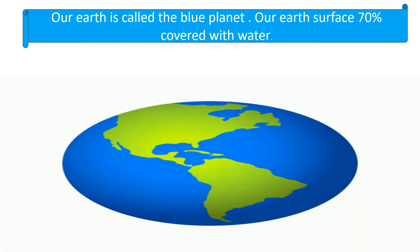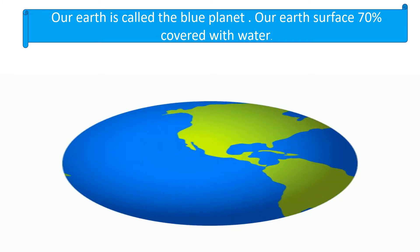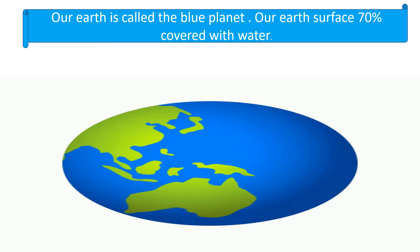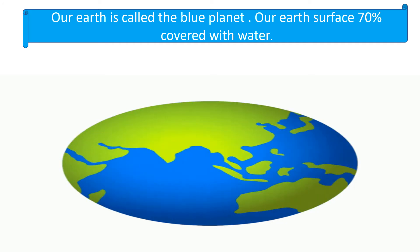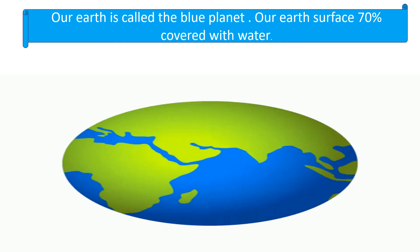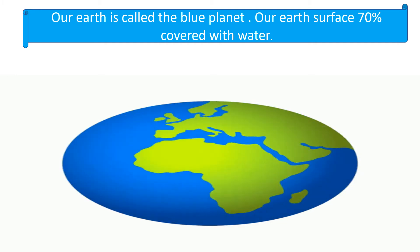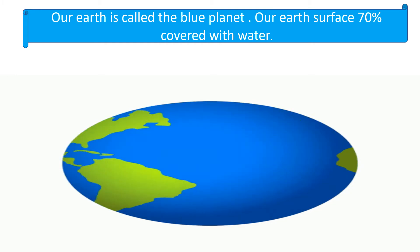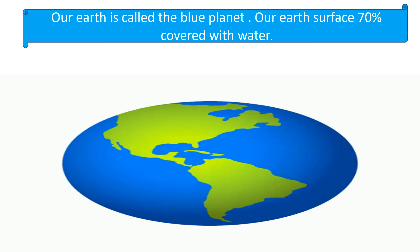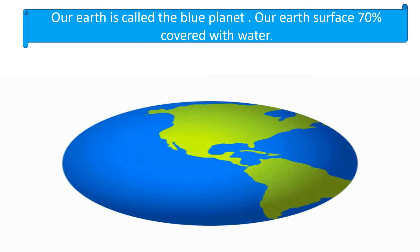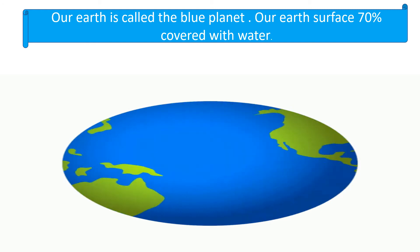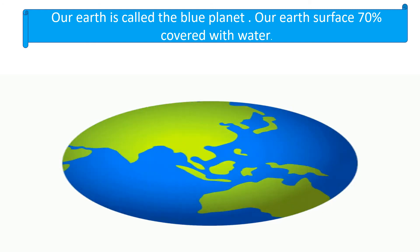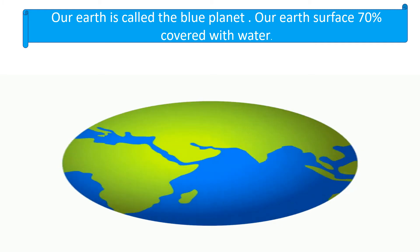Do you know, students? Our Earth is called the blue planet because 70 percent of Earth's surface is covered with water. Water is very important for all human beings, plants, and animals. Without water, all living things cannot survive and live.